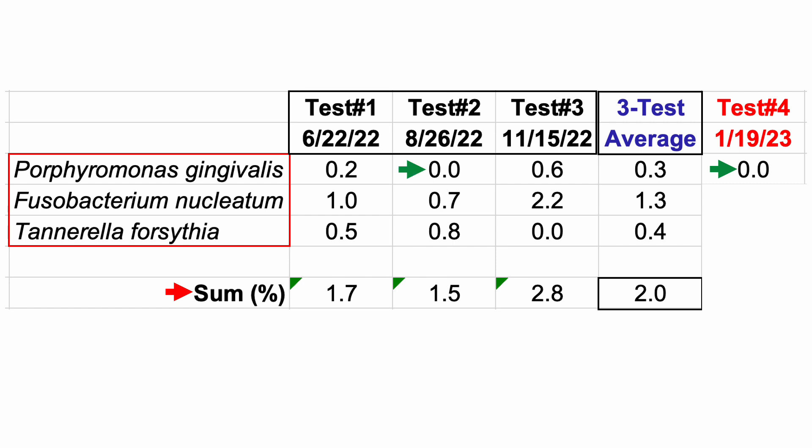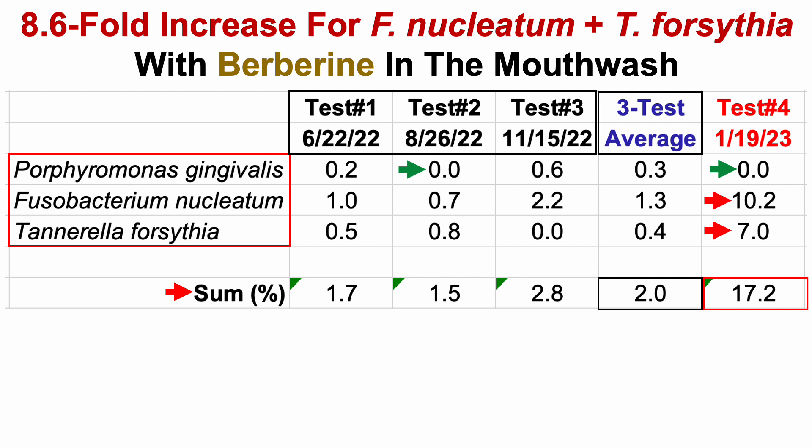For test number four, the good news is that P. gingivalis went back to zero — though I also had zero P. gingivalis in test two, so I'm not sure if berberine was responsible. However, the story for Fusobacterium nucleatum and Tannerella forsythia is not so simple. There was a dramatic expansion of both bacteria, with their combined sum reaching 17.2% of all bacteria — an 8.6-fold increase relative to my three-test average of 2%.